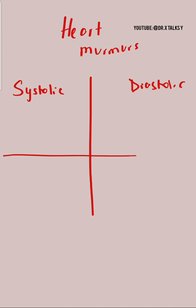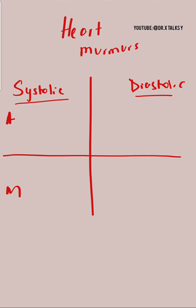I remember them by first making four quadrants. Once I've made this in my mind, I write an A on the top left — you can think of A as the first letter of the alphabet — then an M on the bottom left. On the right side, there is an M on the top and an A on the bottom.